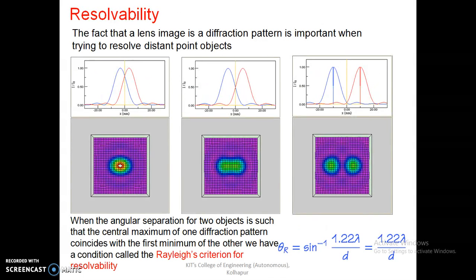Since the diffraction grating can separate out different colors, there must be some resolving power. Resolvability is the ability to resolve — that is, the ability to separate the images of two closely spaced objects using optical instruments.